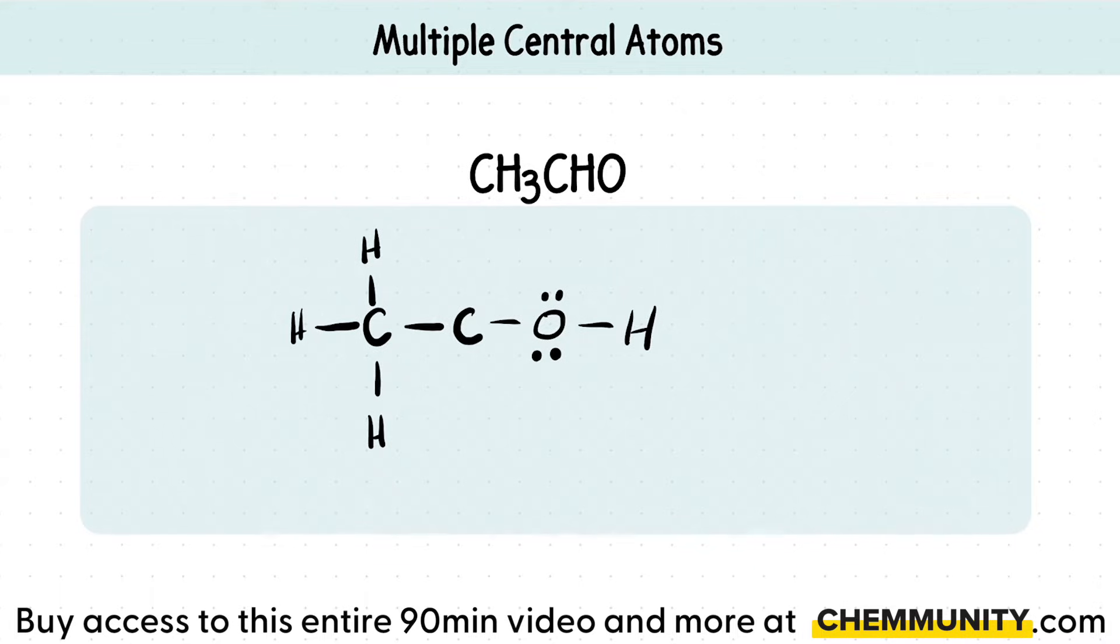I know that because oxygen has six valence electrons, there's one electron here, one electron here, so that's two, three, four, five, and six.